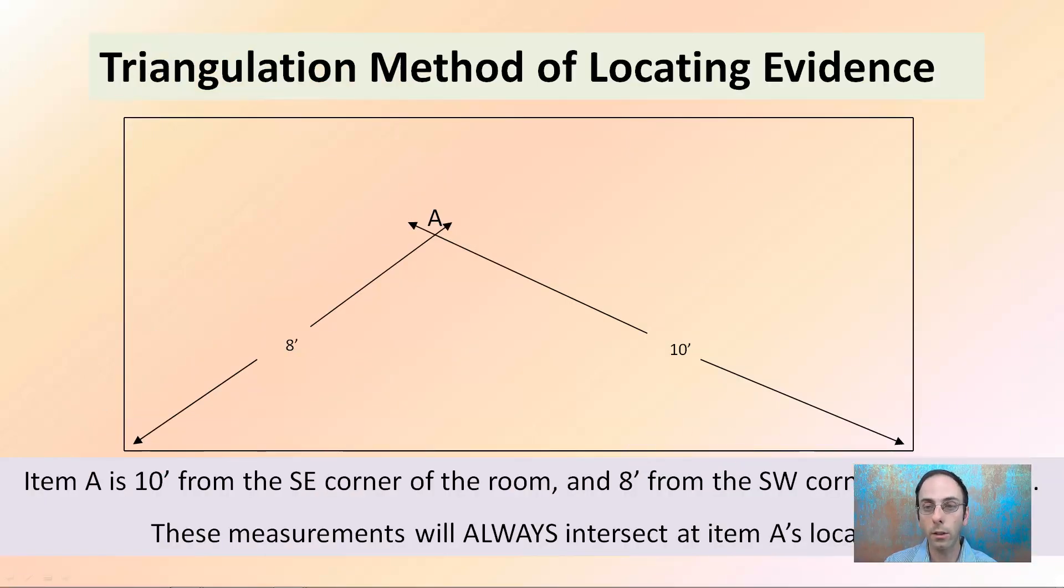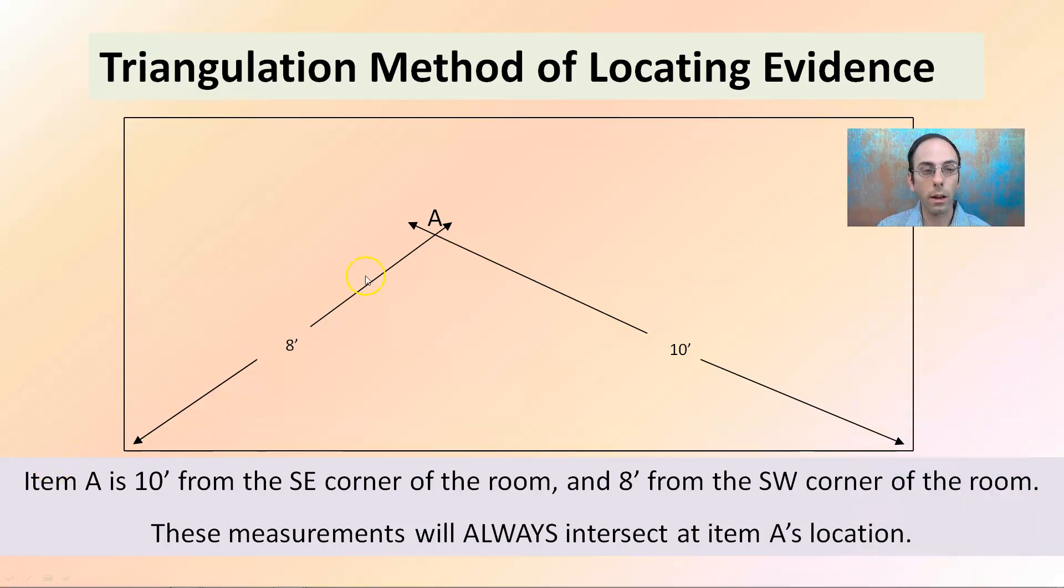So looking at the triangulation method of locating evidence. Here, item A is 10 feet in the southeast corner of the room and 8 feet in the southwest corner of the room. So north is this way. These measurements will always intersect at point A's location.